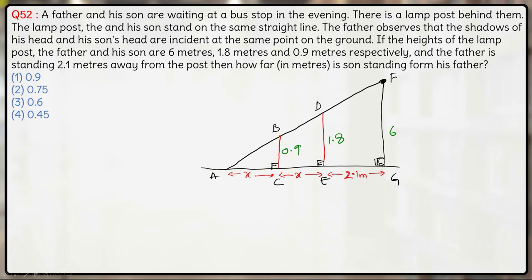We can say that 0.9 upon x will be equal to 6 upon 2x plus 2.1, 2x plus 2.1 over here. So once we cross multiply this...